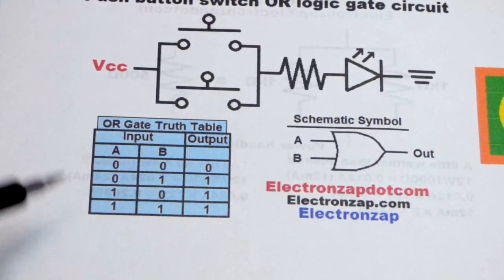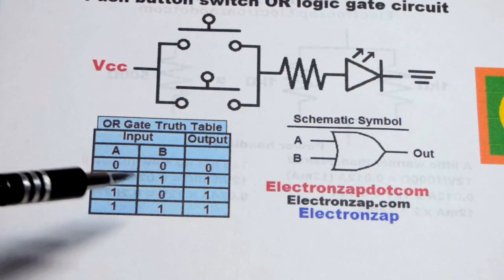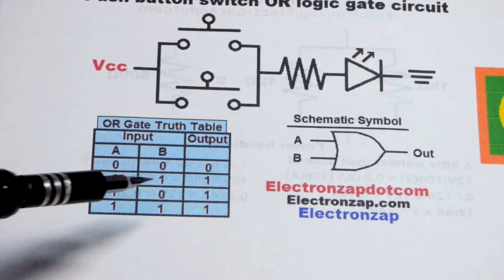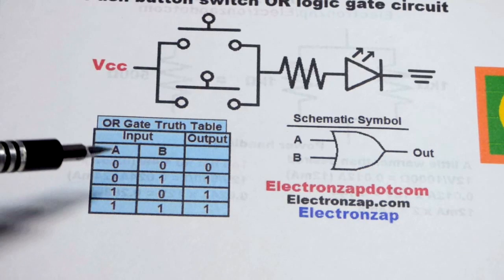So here is the truth table, which has the digital ones and zeros. So one means the same thing as on, zero means the same thing as off.